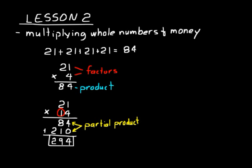We give a special name to those two numbers we added together — the eighty-four and the two hundred ten. We call those partial products, because they aren't really the actual product of that multiplication. They're partial products; they're part of the product.